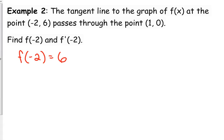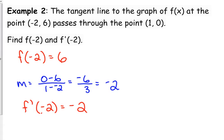Now, f prime of negative 2. So that is the derivative of the function at negative 2, a.k.a. the slope of the tangent line at negative 2. So what information did they give us? They said that the tangent line at this point passes through this other point. Well, we've got two points on a line. Can we find the slope? Yeah. So the slope is 0 minus 6 over 1 minus negative 2. That's negative 6 over 3, which is negative 2. That means f prime of negative 2 is negative 2.